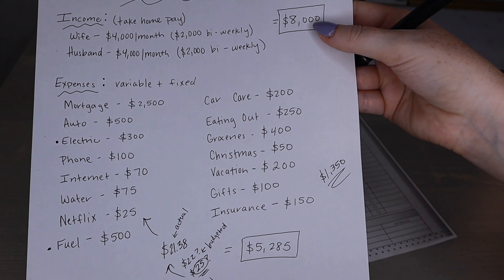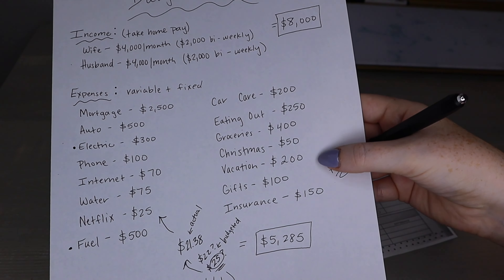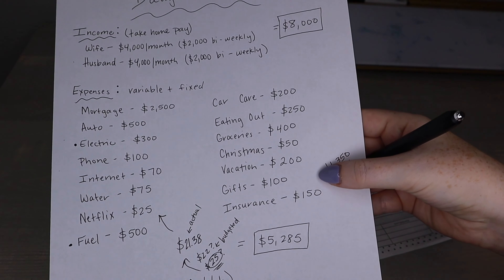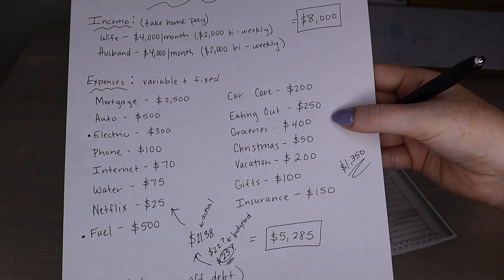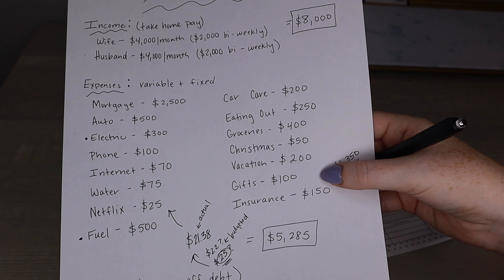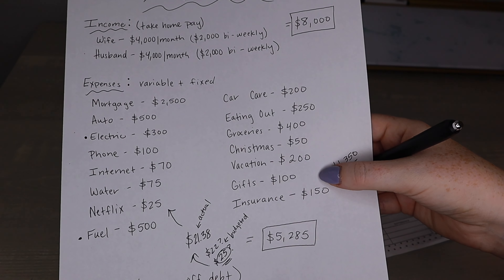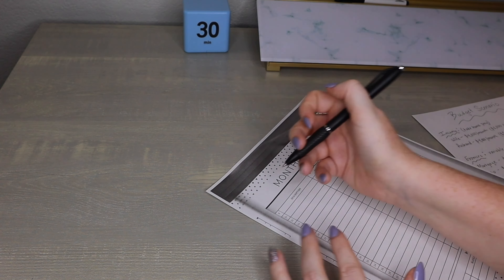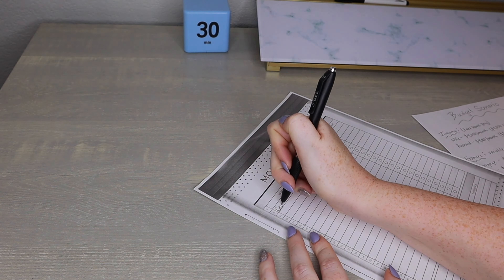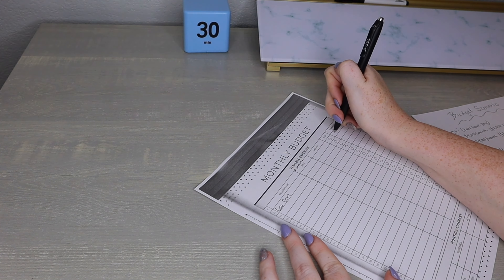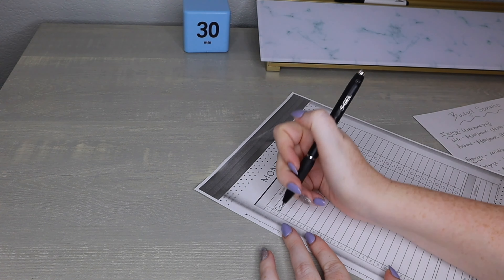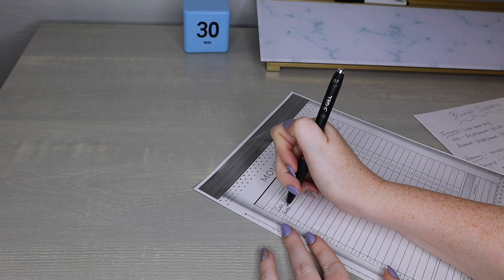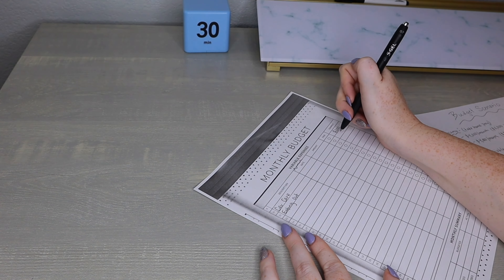For this category, I want you to think of every expense you possibly can — comb through months of statements and see what you spend money on. Do you get your nails done? Do you have a child? Literally write down everything you spend money on or put it in select categories. These are typically all your random expenses that do not come out consistently every single month.